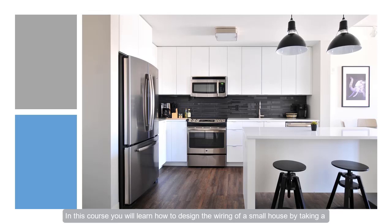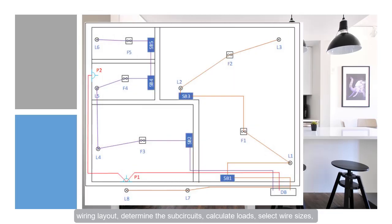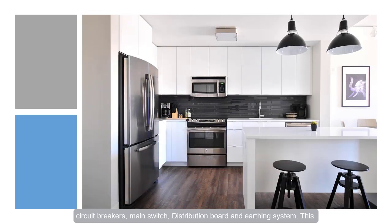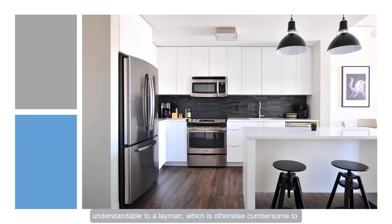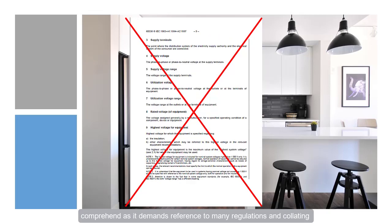In this course, you will learn how to design the wiring of a small house by taking a typical example. From the interior design layout, you will learn how to create a wiring layout, determine the sub-circuits, calculate loads, select wire sizes, circuit breakers, main switch, distribution board, and earthing system. This course simplifies basic aspects of house wiring design, understandable even to a layman, which is otherwise cumbersome to comprehend, as it demands reference to many regulations and collating data from various sources.